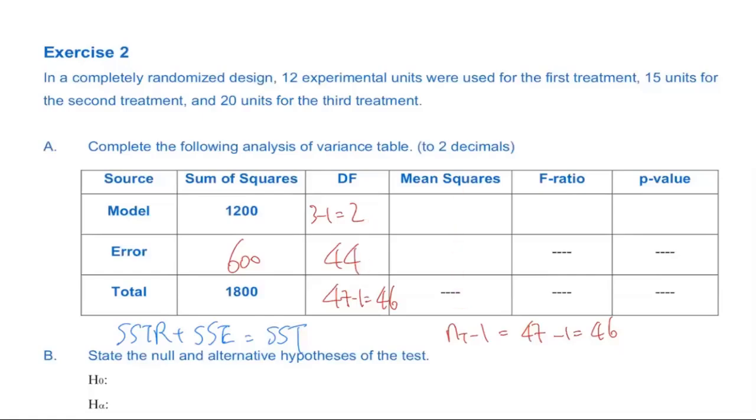Mean squares is gonna be easy. Just the sum of squares over this one. So the first one is 1200 over 2. And 1200 divided by 2, that's 600. And the next one is gonna be right here, 600 over 44. So 600 divided by 44. I've already done the math. That's 13.64. You're almost there. One more step. So what we have here is the last thing, which is F ratio. F ratio is just 600 over 13.64.